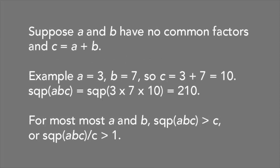The ABC conjecture deals with pairs of numbers that have no common factors. Suppose A and B are two such numbers and that C is their sum. For example, if A equals 3 and B equals 7, then C equals 3 plus 7, or 10. Now consider the square-free part of the product A times B times C. So we have SQP of 3 times 7 times 10, which equals 210.